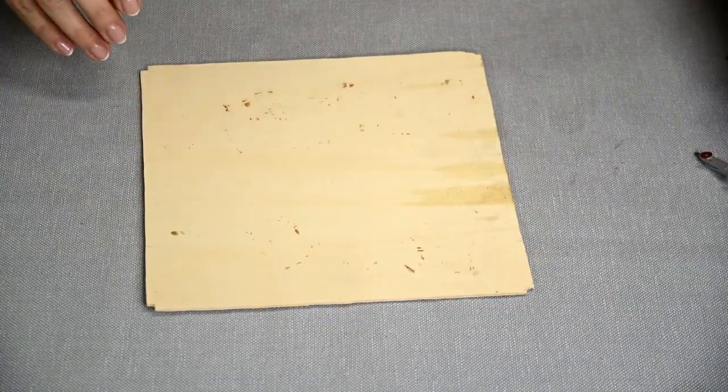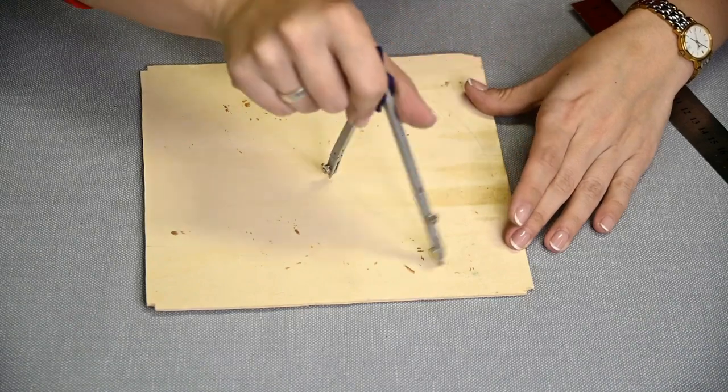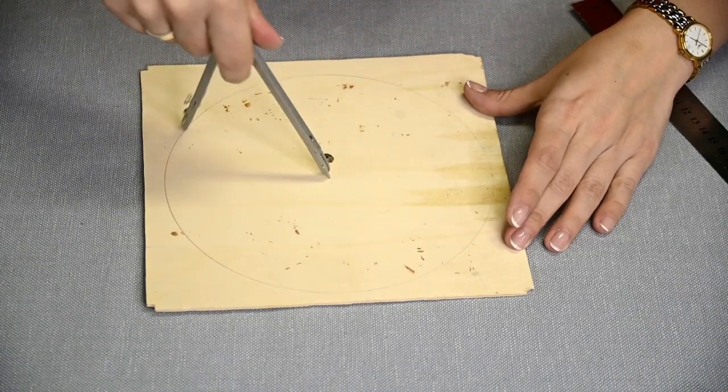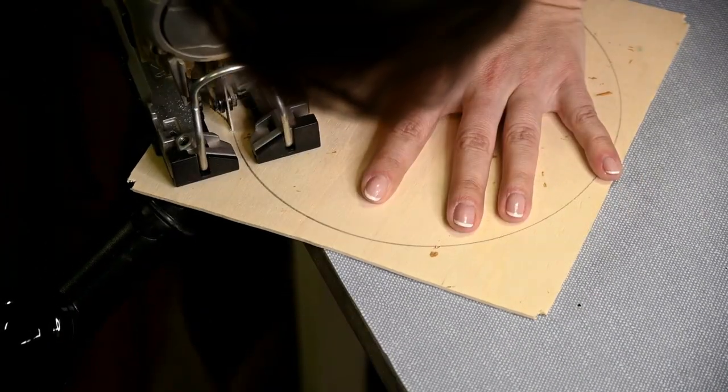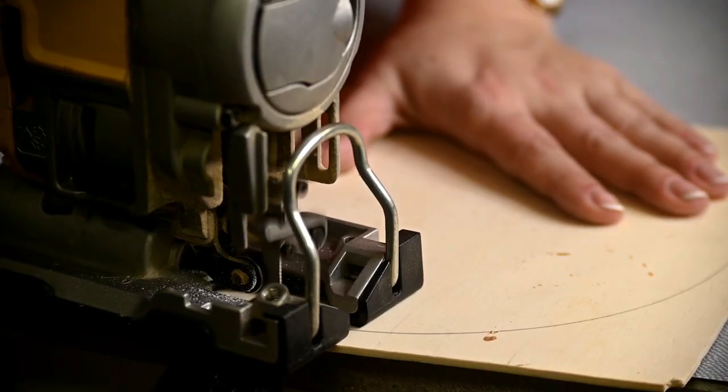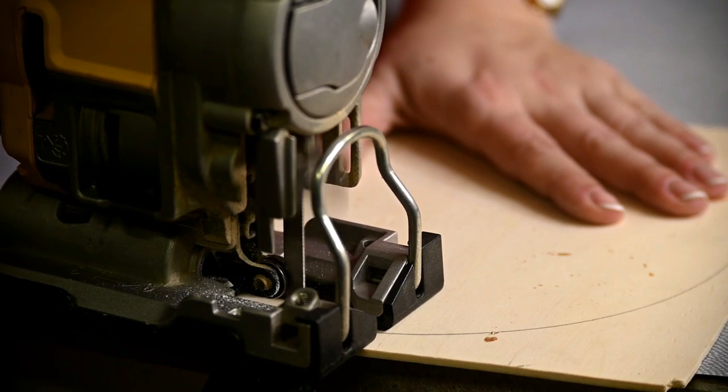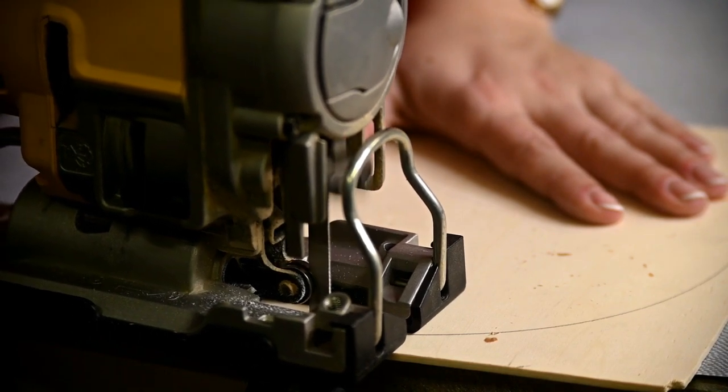I'm cutting the dial for the clock from thin plywood. I had a leftover box of chocolates, found it when decluttering the pantry and decided to use it. You can also buy a ready-made circle of thin plywood or glue several layers of thick cardboard together.